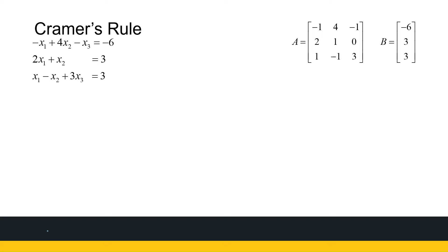Here's our first system. I've got three equations and three unknowns. Cramer's Rule can be expanded to bigger systems, or it can be used on a two-by-two system — two equations and two unknowns. The process stays the same. I've got my coefficient matrix A, and matrix B is the constants on the right-hand side. To be able to use Cramer's Rule, the determinant of my coefficient matrix has to be non-zero.